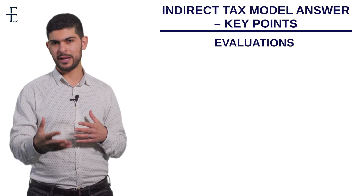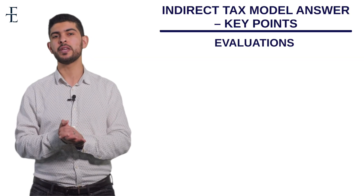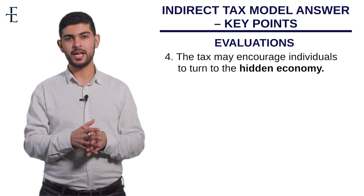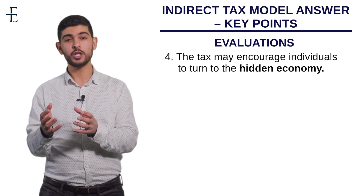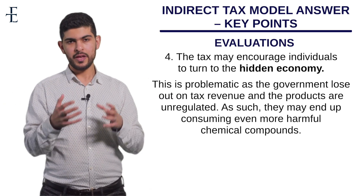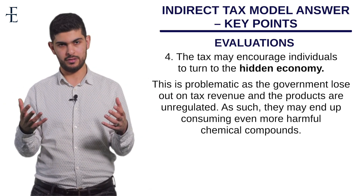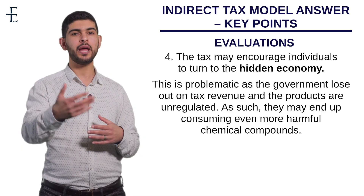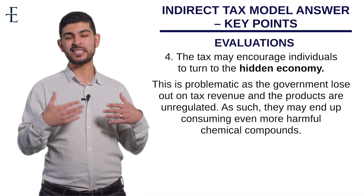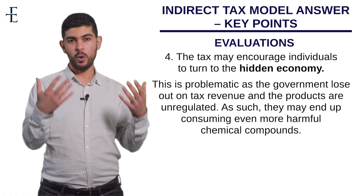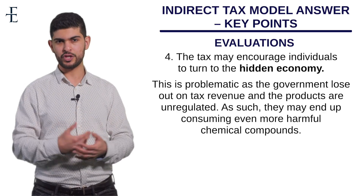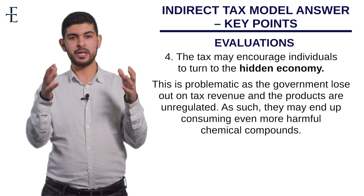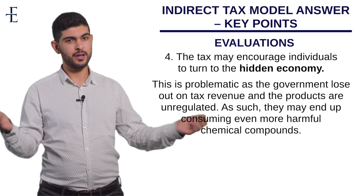Evaluation four: whenever the government imposes a tax, it can encourage people to turn to the hidden economy, also known as shadow markets — for example, illegally smuggling cigarettes. This is another example of government failure. If people buy smuggled cigarettes, not only are they still consuming them, but the quality may be even more harmful because those products haven't gone through health and safety checks. So by imposing the tax, the government may actually incentivize illegal activity.